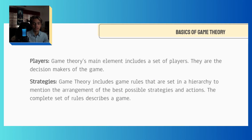Game Theory's main elements include a set of players — they are the decision makers of the game. Game Theory also includes game rules that are set in a hierarchy to determine the arrangement of the best possible strategies and actions. The complete set of rules describes a game.